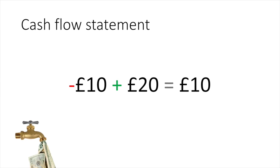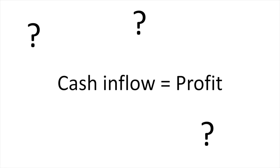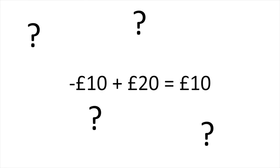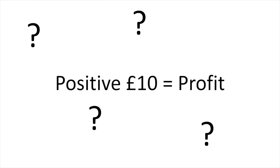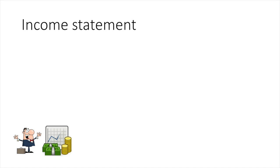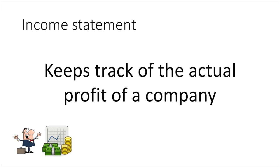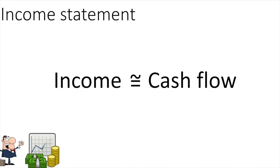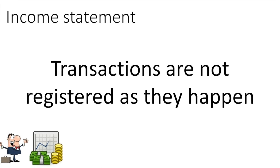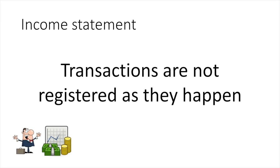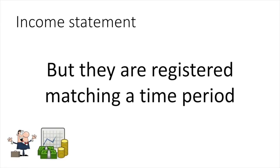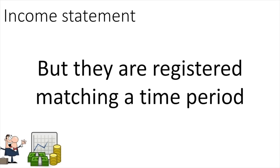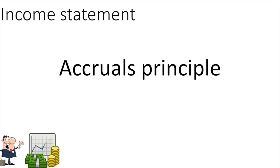But wait — isn't this the same as keeping track of a company's profit? If you pay £10 out and received £20, you must have had a profit of £10, right? Wrong! The income statement is the financial sheet that keeps track of the actual profits of a company. It is very similar to the cash flow statement, but instead of registering the ins and outs as they happen, in the income statement the transactions are registered matching the time period when they occurred. This is known as the accruals principle.